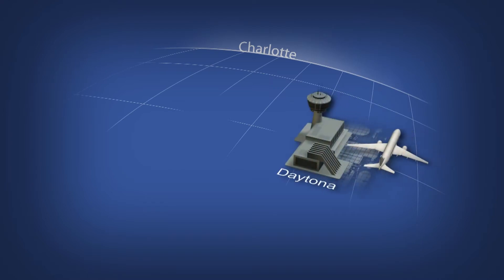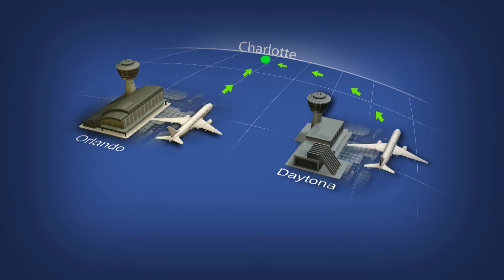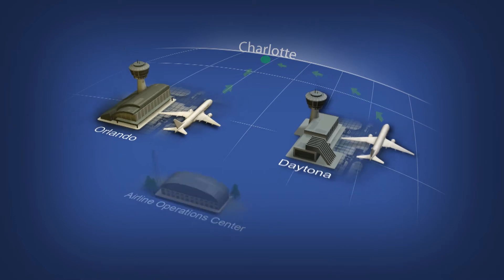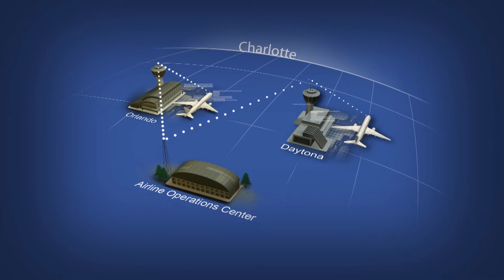For this test, NextGen Flight 1 is out of Daytona Beach bound for Charlotte. NextGen Flight 2 starts out in Orlando, also bound for Charlotte. The airline files flight plans for both aircraft, creating an SFDO for each flight. This feeds into tools that calculate optimal pushback times, runway assignments and taxi routes.